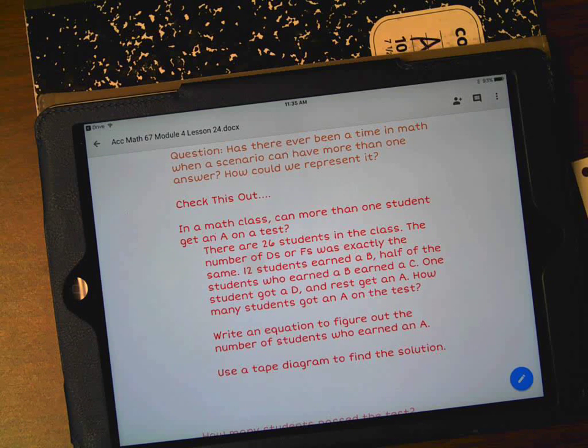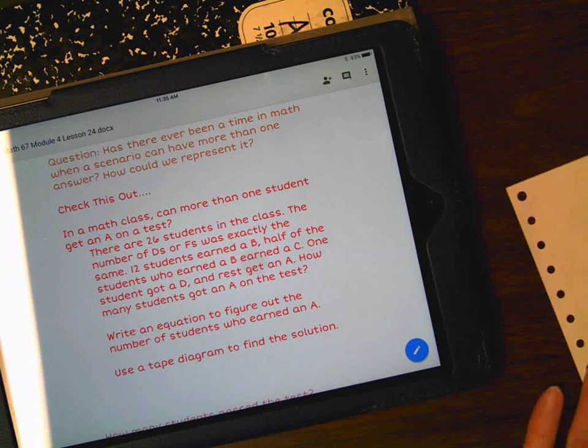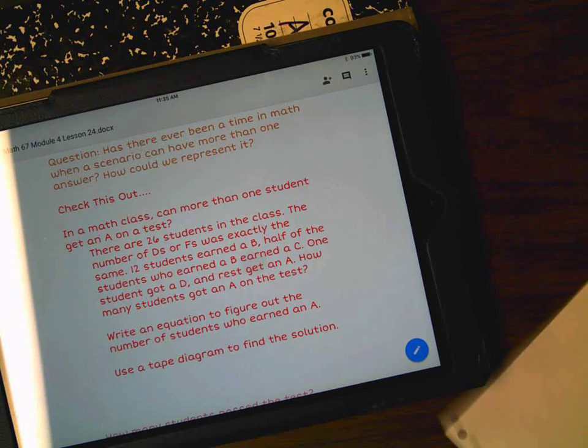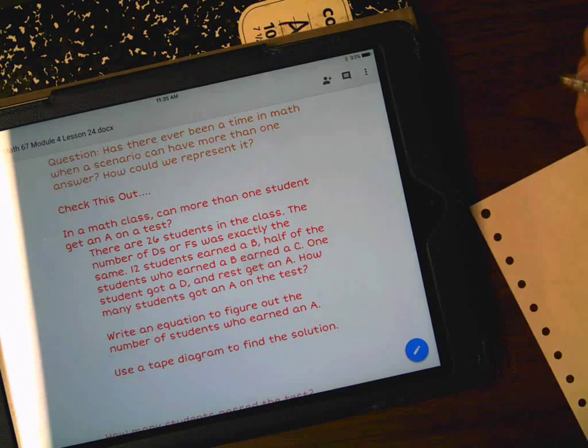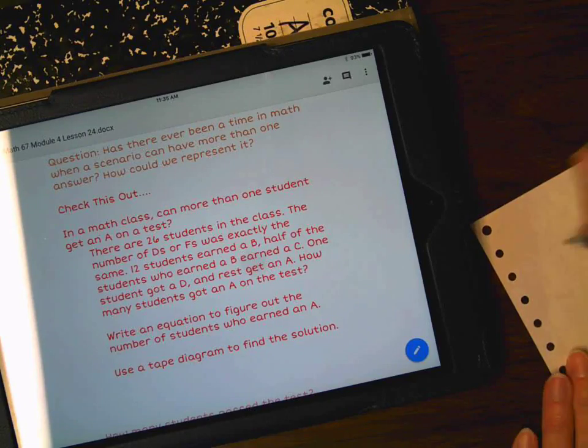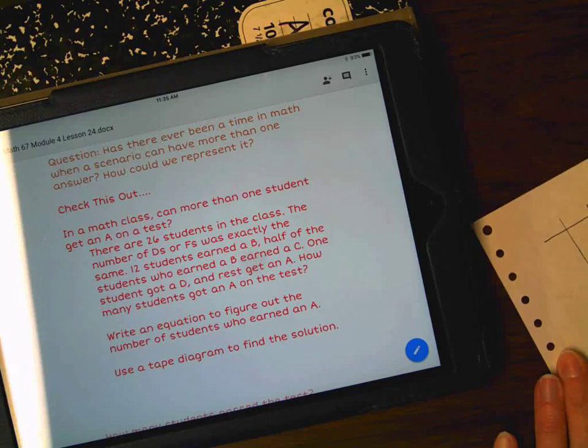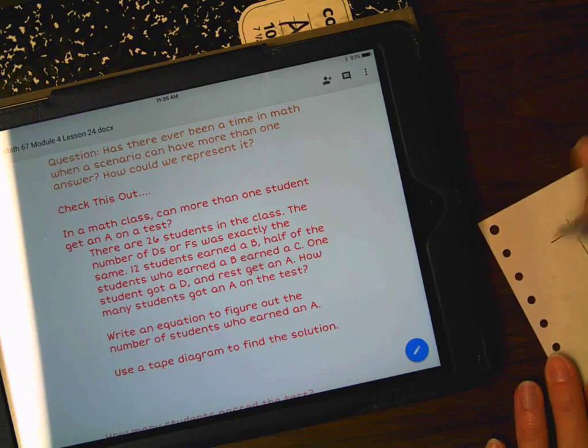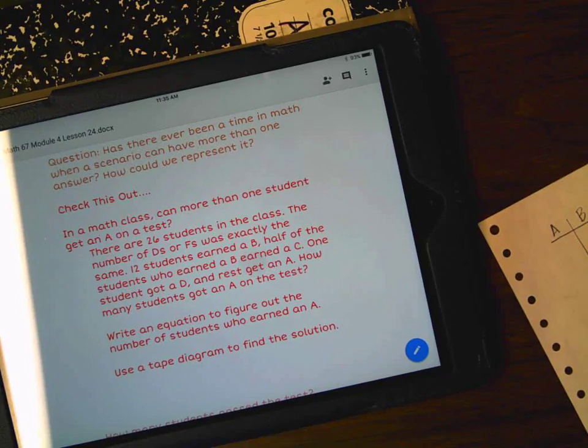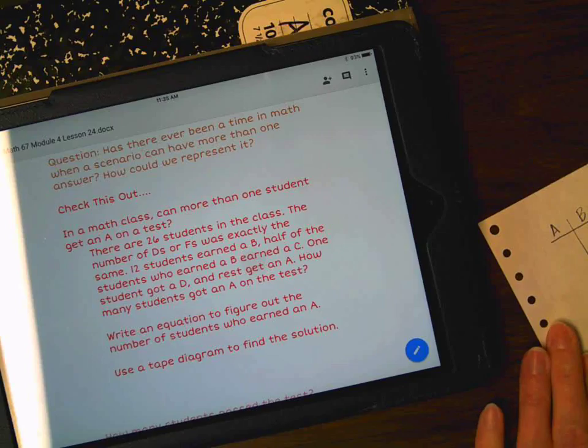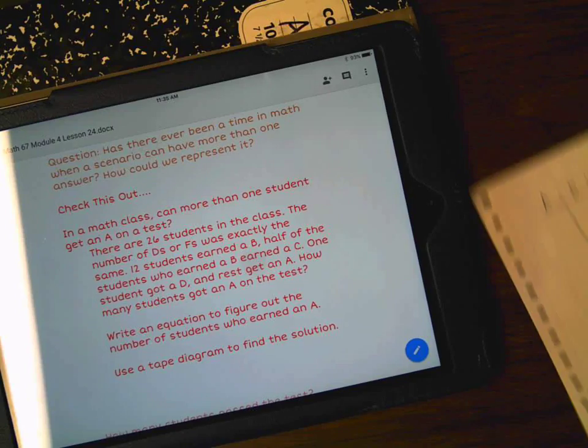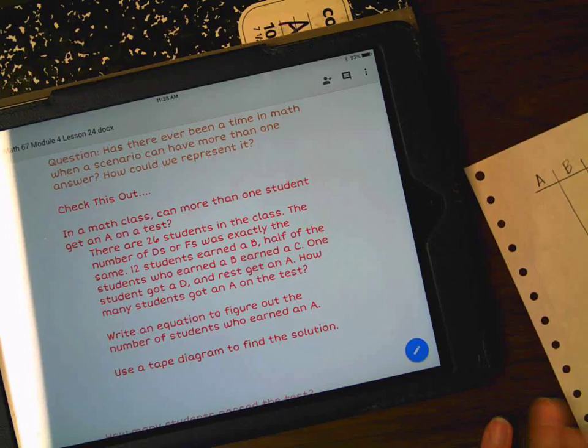We've been working with these kind of problems all week, so this shouldn't be too hard. Let's set up what we're supposed to do. You're supposed to write an equation and figure out the students who got an A. I'm going to make a table because that's a really good way to help me organize my thoughts. I'm going to put on my table all of the kids that got an A, B, C, D, and F. And there's a total column. It says there are 26 students in the class, so I know my total has to equal 26.